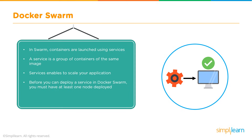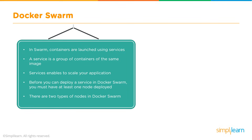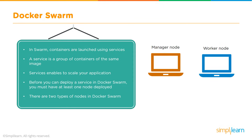One requirement for setting up a Docker Swarm is that you must have at least one node deployed. The architecture requires a manager node and a worker node — one of each — for the entire environment to work effectively. There are two types of nodes in a Docker Swarm: the manager node and the worker node, which is the client that performs the actual execution of tasks.